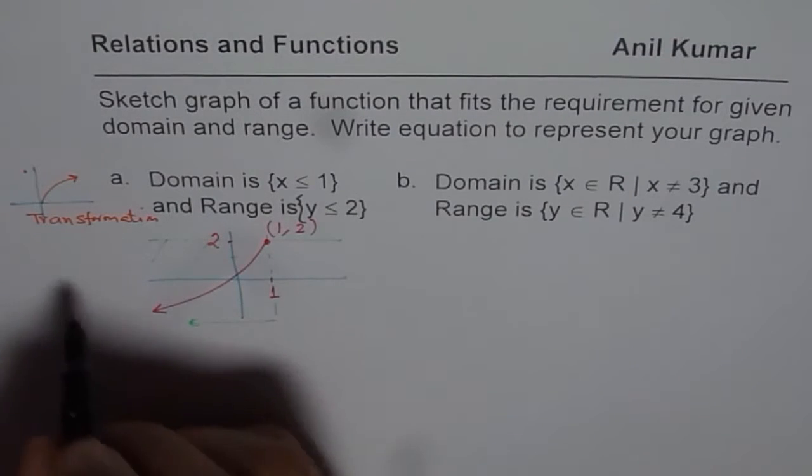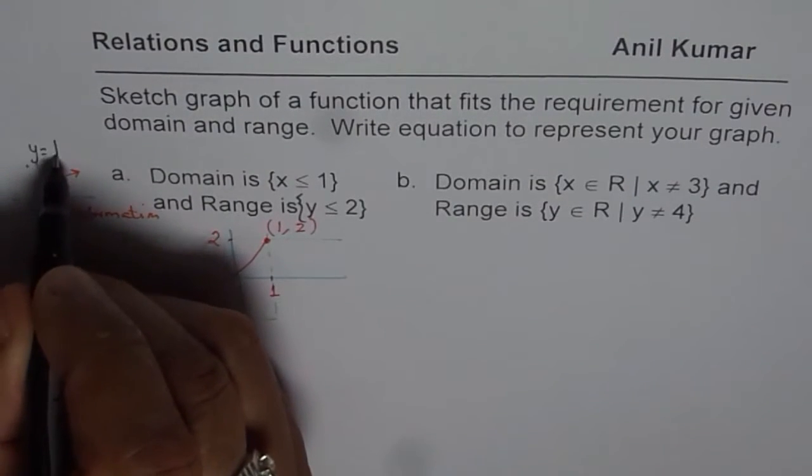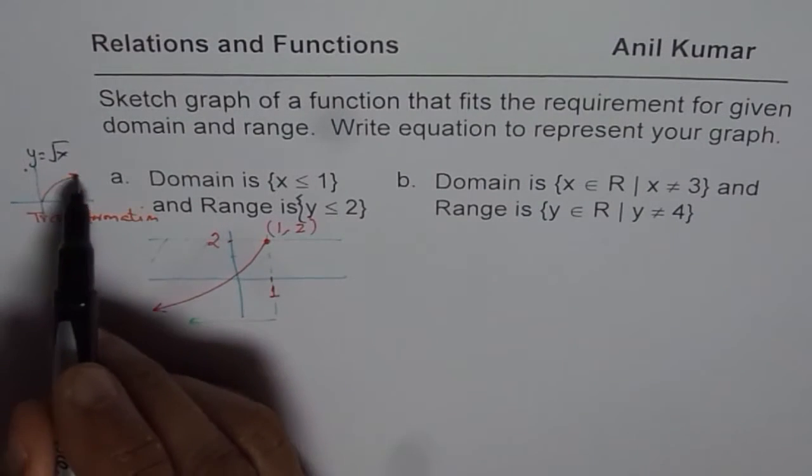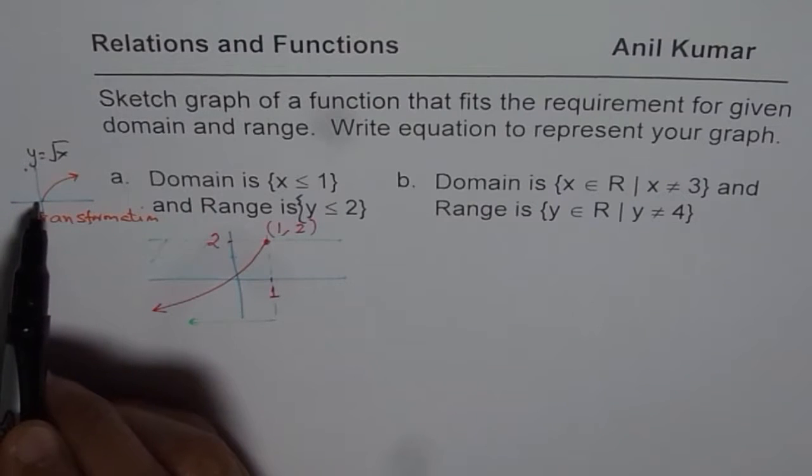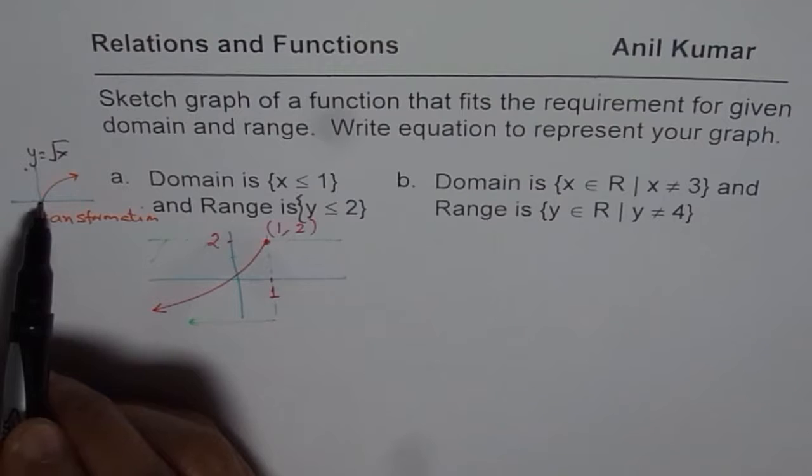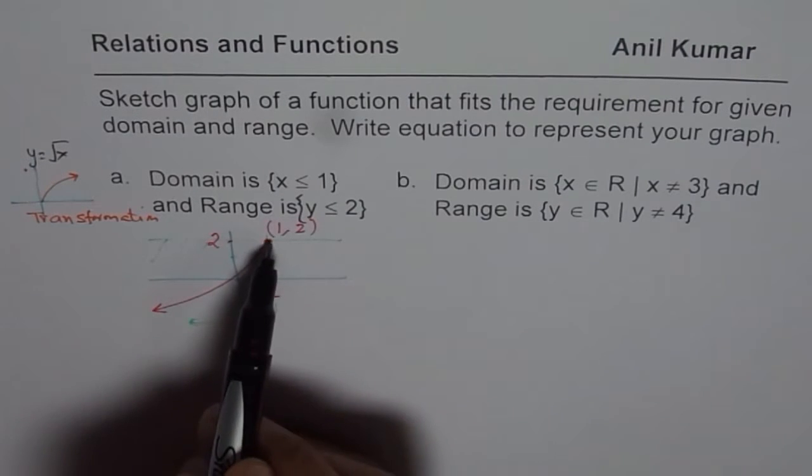Now, transformations here, we are looking at y equals to square root of x. We need to transform so that y equals to square root of x gets reflected on the y-axis and also on the x-axis. Then you get a shape like this.